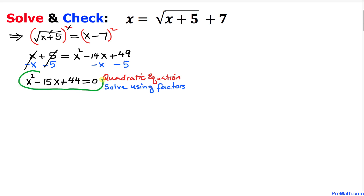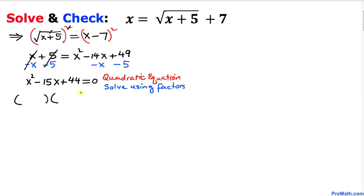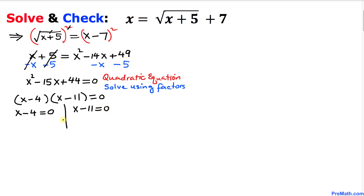This is our quadratic equation and we are going to solve it by factoring. The possible factors for 44 are 4 and 11, so our factors are (x minus 4) and (x minus 11). Setting each factor equal to 0 gives us x equals 4 and x equals 11 as our two solutions.